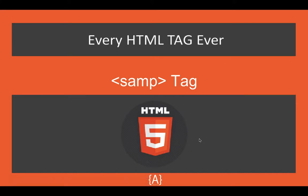Hey, what's going on guys, Asad here. In this tutorial I'm going to be talking about the SAMP tag. What the SAMP tag does is it defines the output of a computer program. So if you are creating an online computer program, or using online compilers or transpilers, you can use this tag.